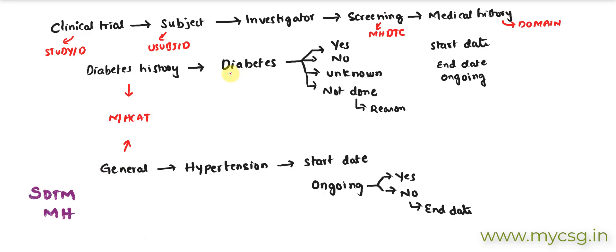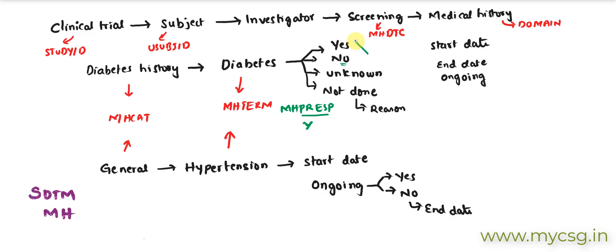The actual medical condition as reported by the subject is stored in a variable called MHTERM — so both 'diabetes' and 'hypertension' would go into MHTERM. For diabetes history, where the question is specifically asked, we have a variable called MHPRESP — pre-specified medical history — which is populated as 'Y' to indicate we are explicitly asking whether the subject has that condition.